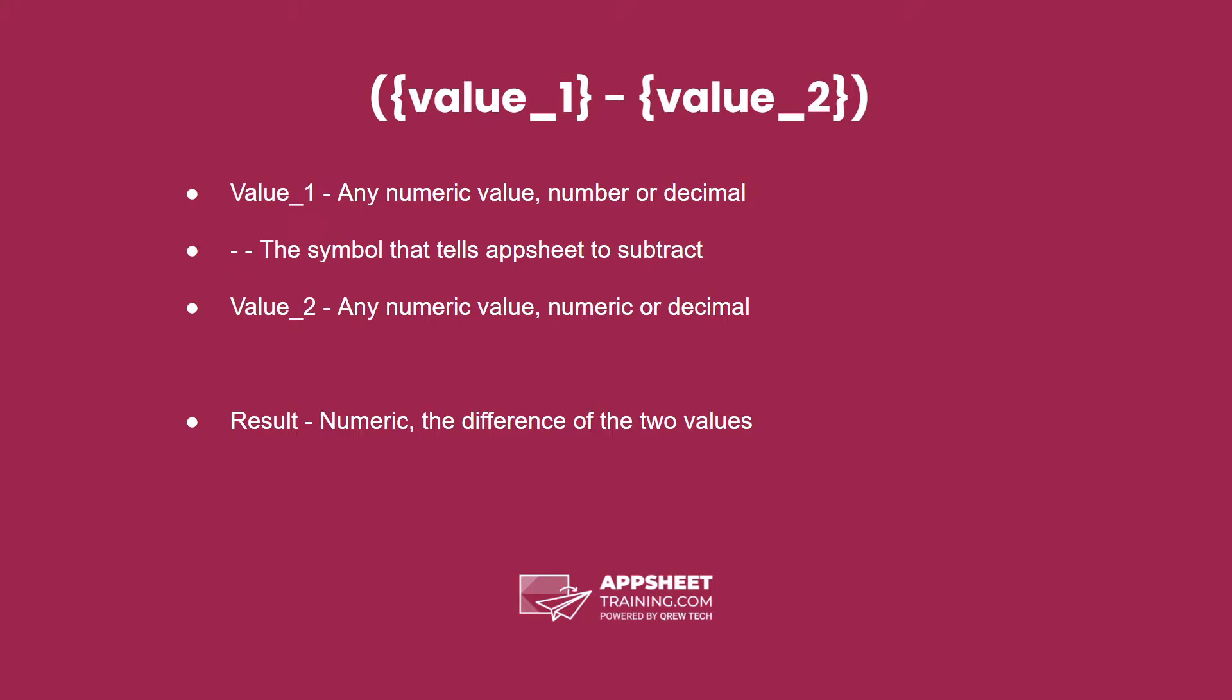The syntax is the first value, any numeric data type, either a number or a decimal. The minus sign, which is the symbol that tells AppSheet to subtract. And the second value, which is any numeric value, a numeric or decimal.